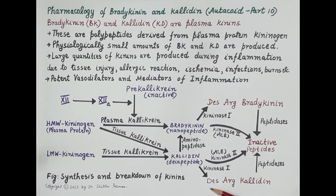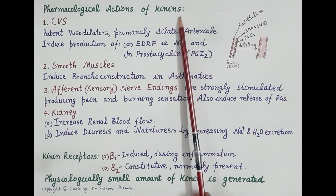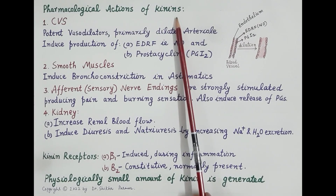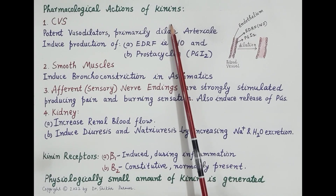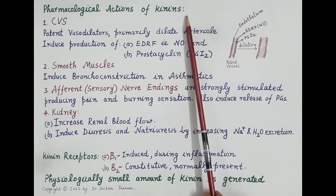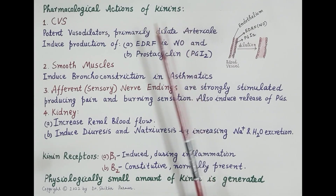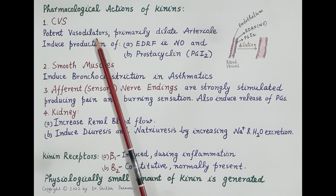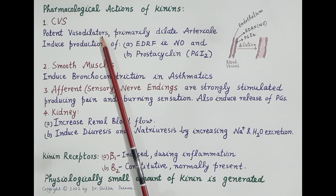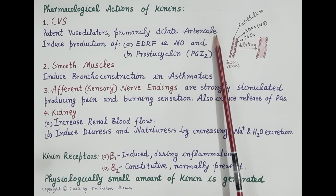Now let's look at the pharmacological actions of kinins. Bradykinin and calidin have similar actions. Normally small quantities of kinins are produced, but during inflammation large quantities are produced. The first effect is on the cardiovascular system: kinins are potent vasodilators, even more potent than histamine, and they dilate the arterioles.